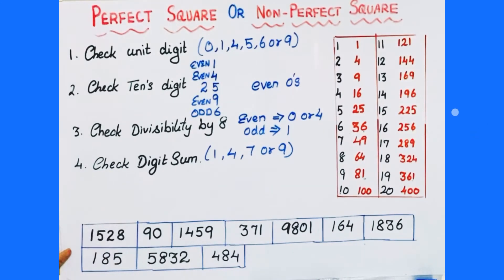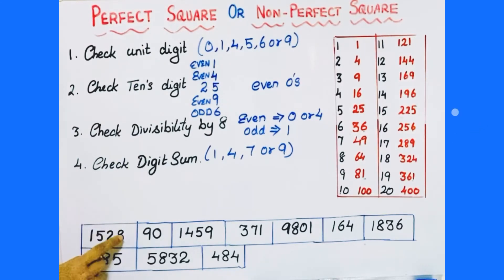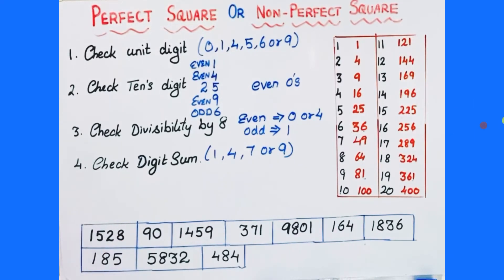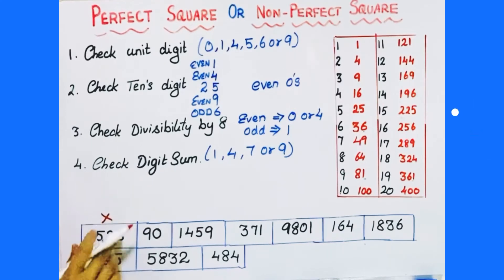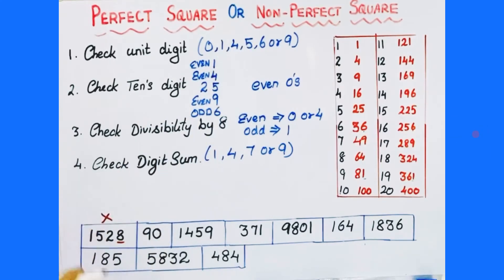Now let's identify which numbers are perfect squares. First number is 1528. Check the unit digit — it is 8. A number ending with 8 cannot be a perfect square. So 1528 is not a perfect square, as its unit digit is 8.